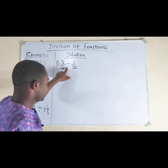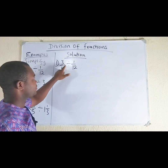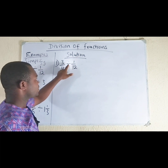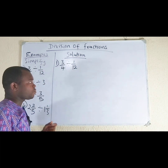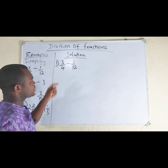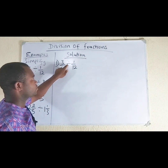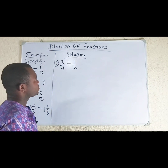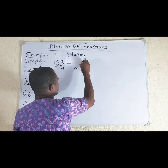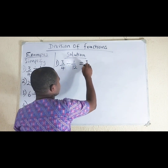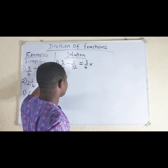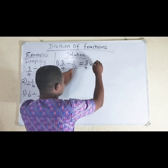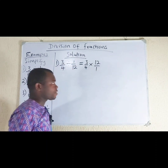For us to evaluate this division, when you are dividing a fraction by another fraction, this division sign will change to multiplication. And after changing it to multiplication, you are going to invert this fraction. So, 3 over 4 times, we change this into 12 over 1.